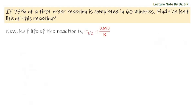Now, half-life of the reaction is T half is equal to 0.693 by K. Or, T half is equal to 0.693 by 2.31 into 10 to the power minus 2.